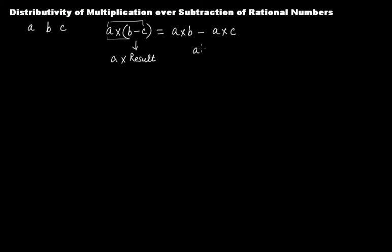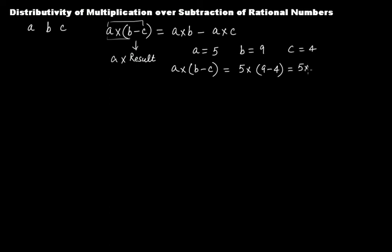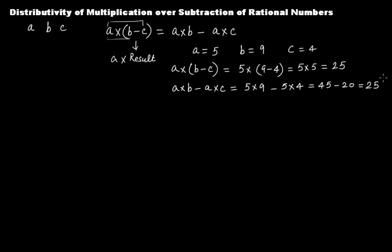Let's say a is 5, b is 9, and c is 4. For a times (b minus c): 5 times (9 minus 4) = 5 times 5 = 25. For a times b minus a times c: 5 times 9 minus 5 times 4 = 45 minus 20 = 25. We get the same result either way, and the same thing is true for rational numbers.